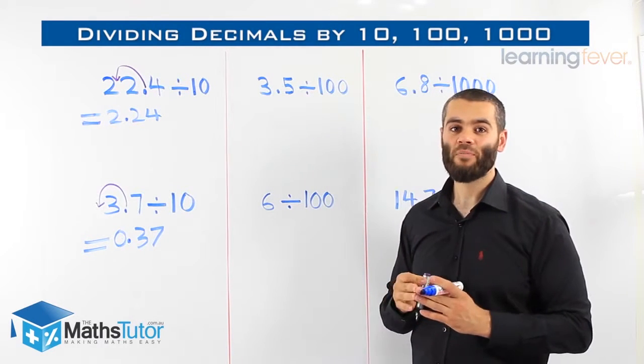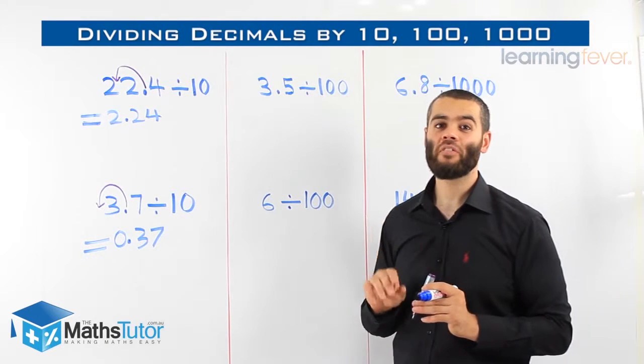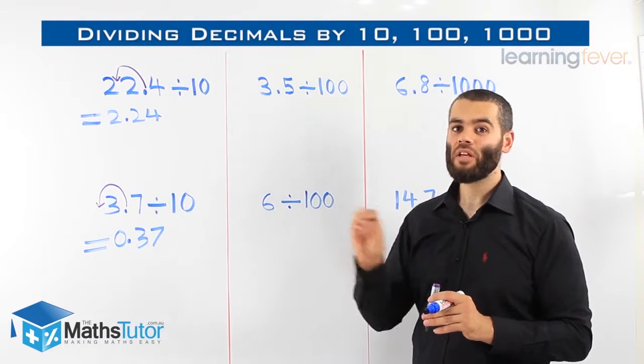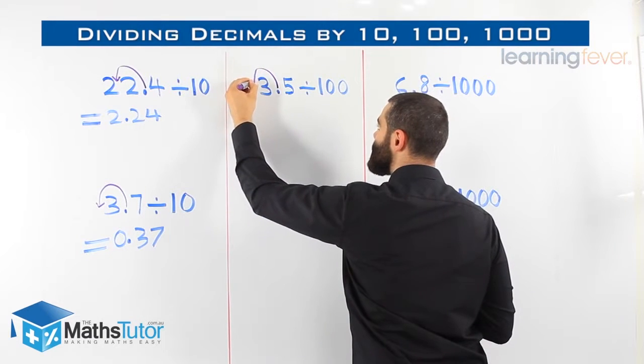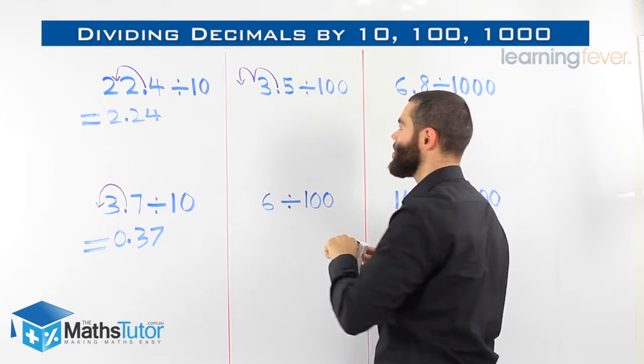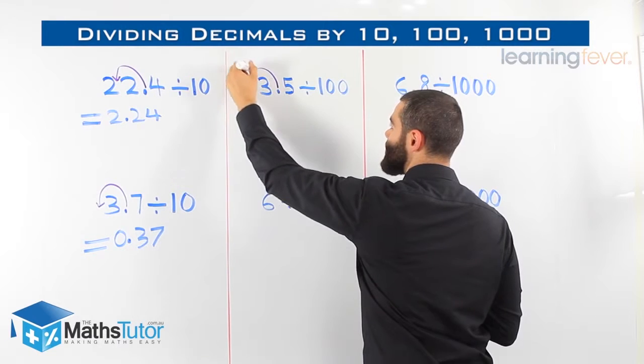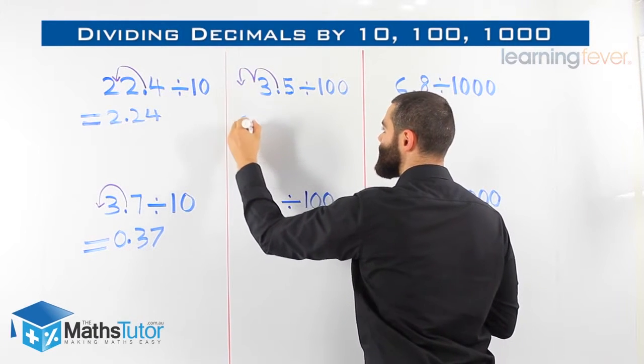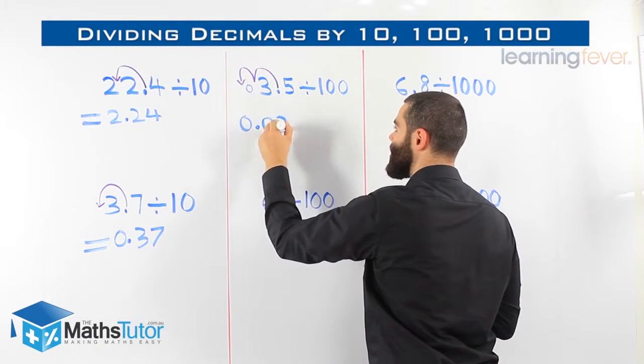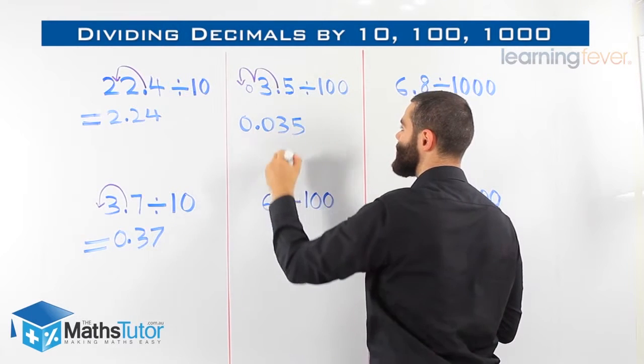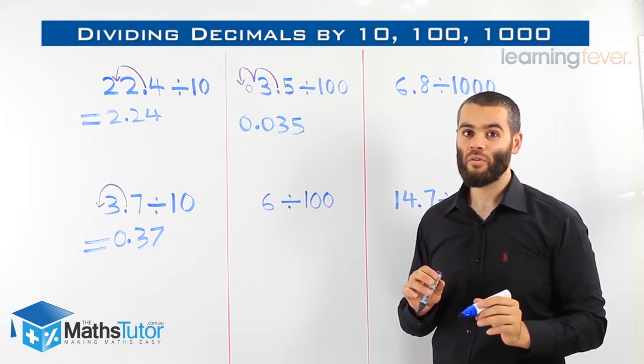3.5 divided by a hundred. Now, we're dividing by a hundred. Remember, there are two zeros. That means we're jumping twice. We're grabbing and moving the point twice. So we grab the point and we say, move once and move twice. We're moving and jumping over the three and over nothing, which means we're jumping over zero. So our point, zero point, we're jumping over nothing, so there's a zero going to go there and three five. So 3.5 divided by ten is 0.035.